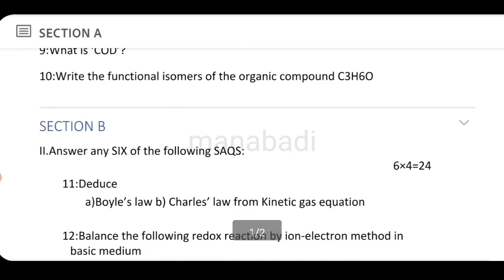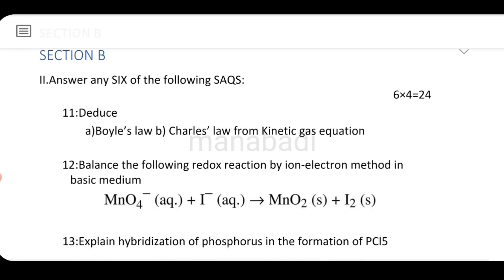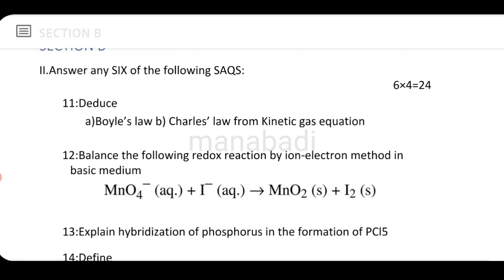Next is section B — short questions. We choose to answer the short questions, each worth 4 marks. Six fours are twenty-four marks. First question: deduce Boyle's law and Charles' law from the kinetic gas equation. Prove the derivation from the kinetic gas equation for Boyle's law and Charles' law.